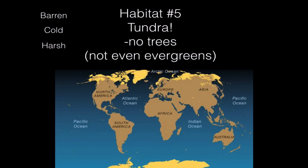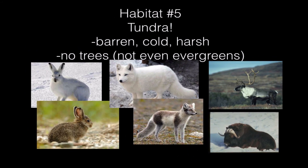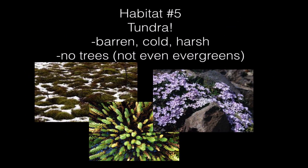Tundra — there are no trees, not even evergreens. But there are some plants that appear during the very short summer. It's very barren and cold, not quite in the polar region but almost there. Many animals change color between summer and winter — the arctic hare turns browner in summertime, and the arctic fox turns a brownish color in springtime to blend in with the changing background. We've also got muskox and caribou. The tundra in summertime is very barren, cold, and harsh with no trees.